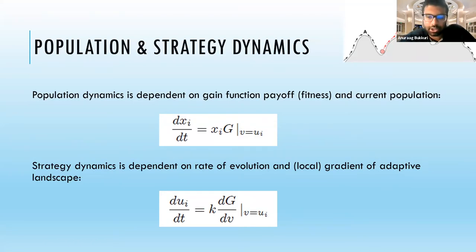For our population dynamics, we say this depends on G, our fitness generating function. This is given as a per capita growth rate, so we multiply that by our current population to obtain our population dynamics.